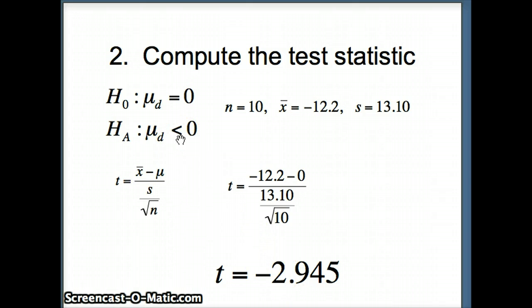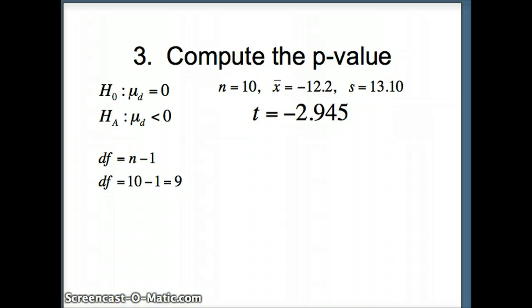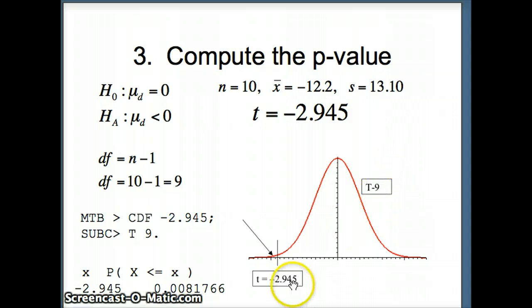My ha is mu sub d is less than 0. So I have to shade to the left of negative 2.945. So here's our information. You'll notice that df is n minus 1. df is 10 minus 1, or 9 degrees of freedom. We are shading to the left, so we ask Minitab cdf, negative 2.945, semicolon, t9. And what does that give me? That gives me a very, very small probability of 0.008. So there's our t9. There's our negative 2.945 with 0.008 in the tail. So 0.008 will indeed be my p-value, a very, very small p-value.